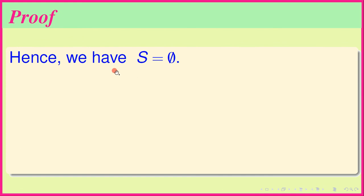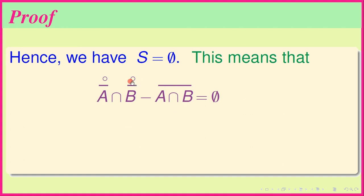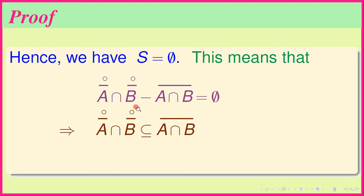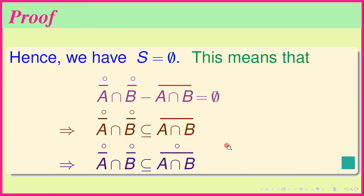Hence S equals the empty set. This means (Ā)° ∩ (B̄)° is contained in (A ∩ B)̄. Since the left-hand side is open, it is contained in the interior of the right-hand side, giving (Ā)° ∩ (B̄)° ⊆ (A ∩ B)̄°. This completes the proof of the main result.